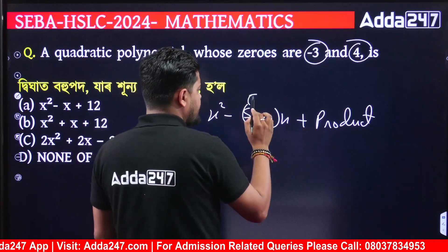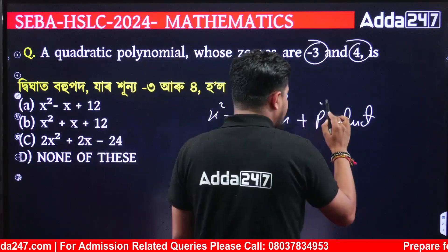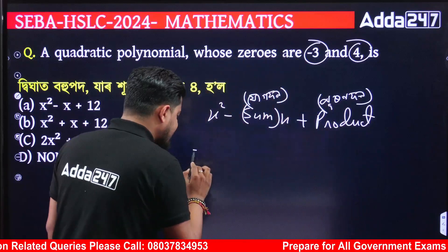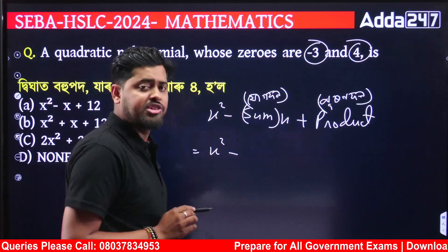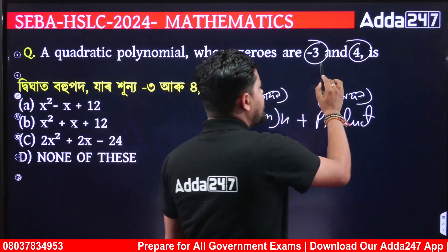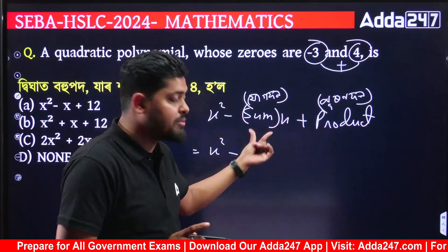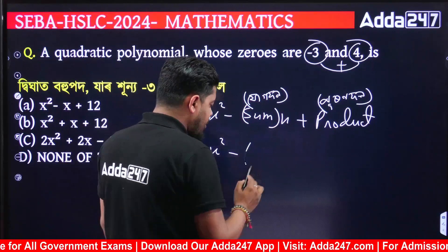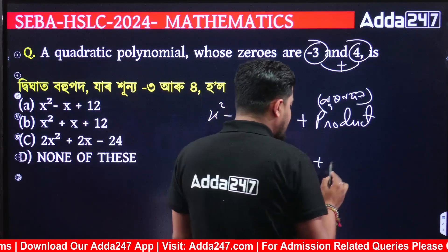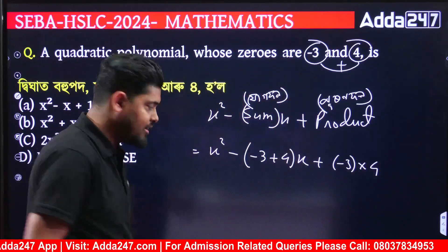You have to use x squared minus (sum) into x plus product. Sum means sum of the roots, product means product of the roots. So x squared minus (minus 3 plus minus 4) into x plus (minus 3 into 4).